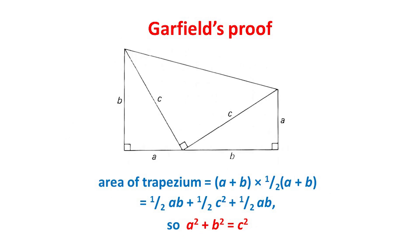Our second proof is due to James Garfield, who later became the twentieth president of the United States. It apparently came to him during a mathematical discussion with members of Congress. He placed them end-to-end and joined their top corners to form a trapezium with vertical sides of lengths b and a and with base a plus b.